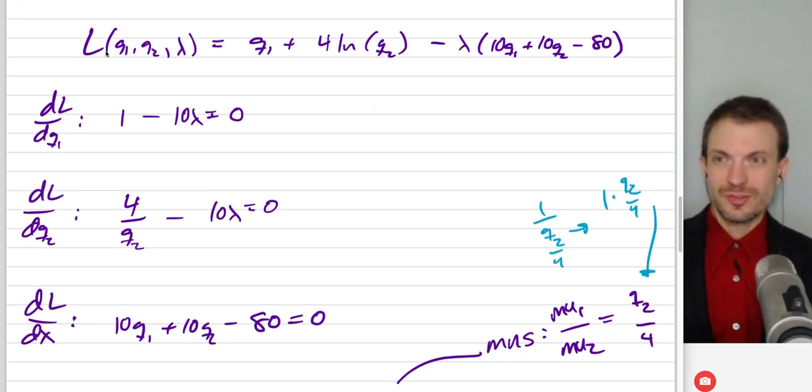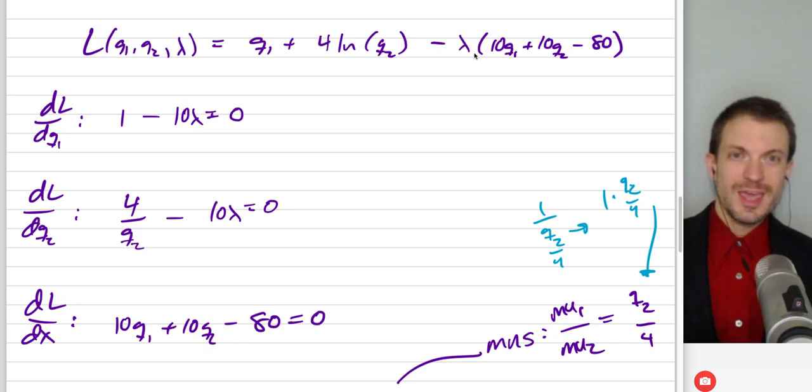Here is my Lagrangian function. This is a function of the amount of good one, amount of good two and then lambda. So this is the objective function, the utility function portion, and then this is the constraint. This is constrained optimization. We are going to maximize the objective function subject to this constraint. Lambda is the penalty for violating the budget constraint. Utility presumably rises as we consume more of good one and more of good two. What would deduct from our utility? If we violated this constraint. If the expenditure on good one plus the expenditure on good two was $81, then we would deduct lambda from whatever would be our utility. This is the penalty for violating the constraint.